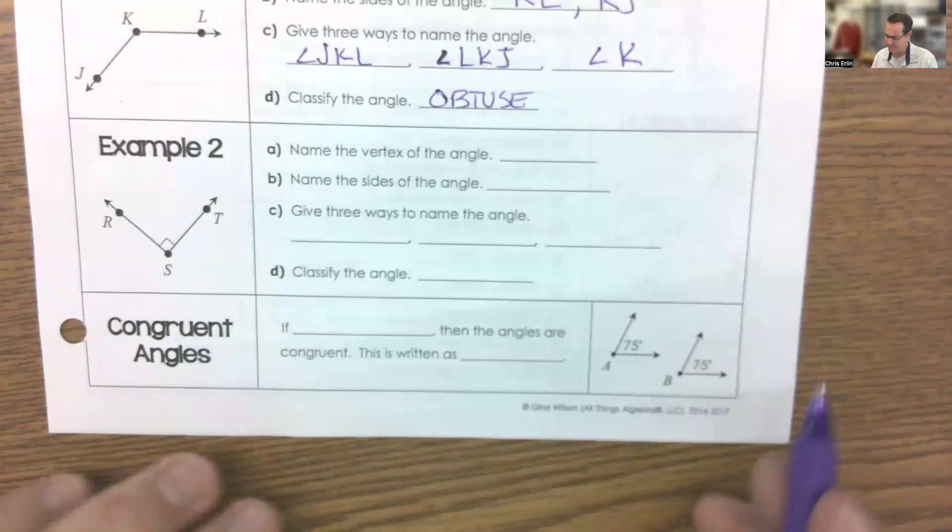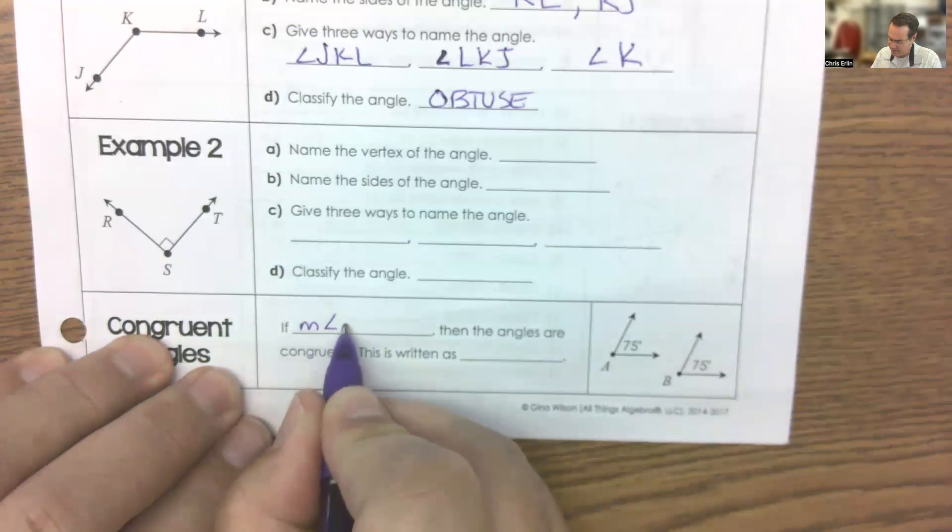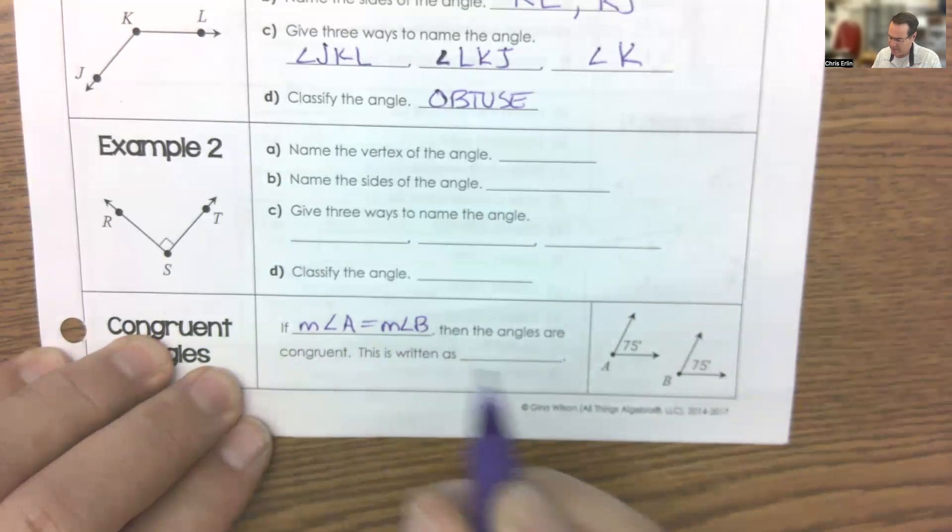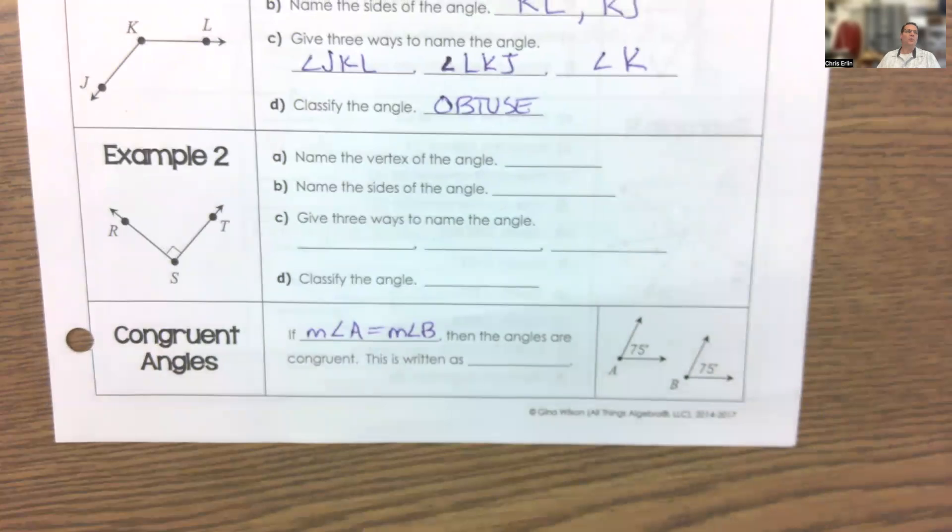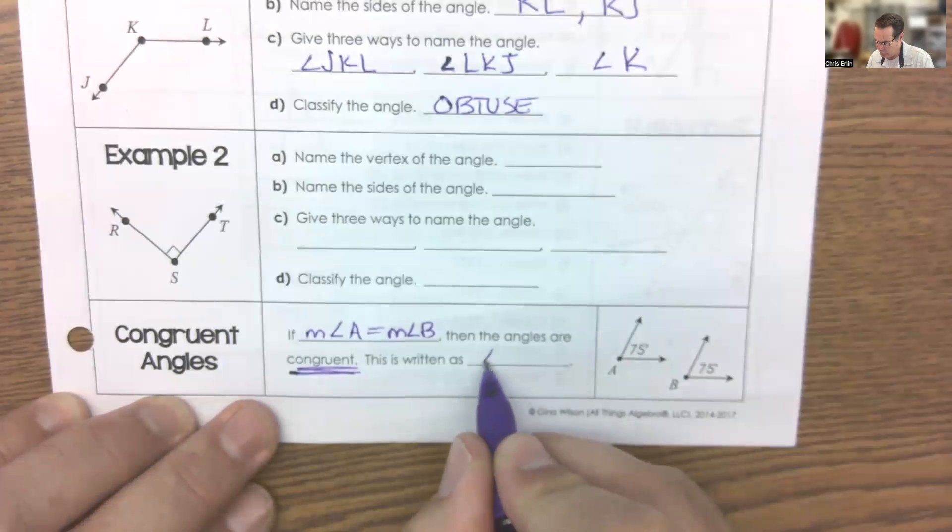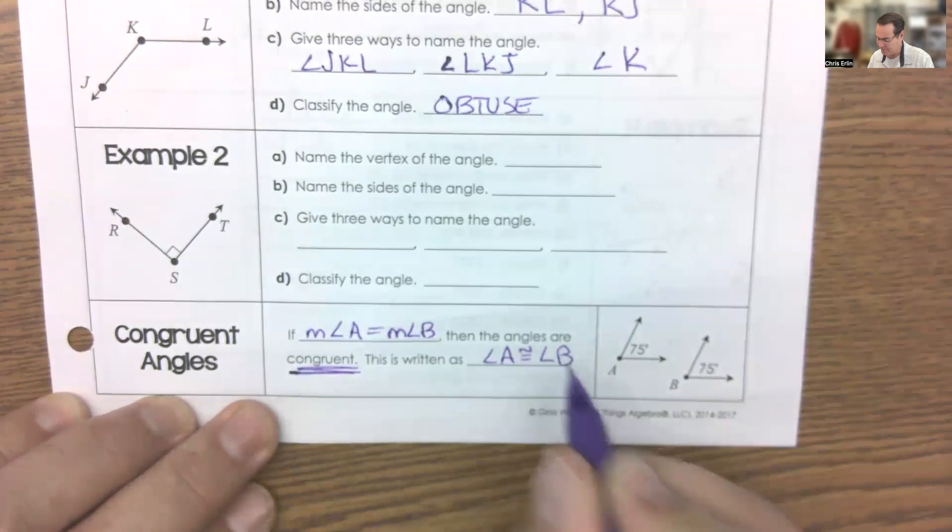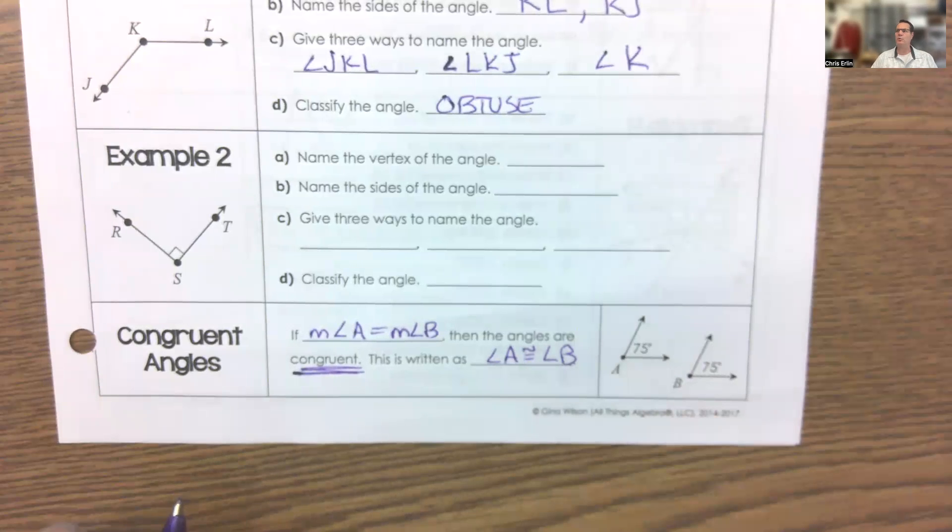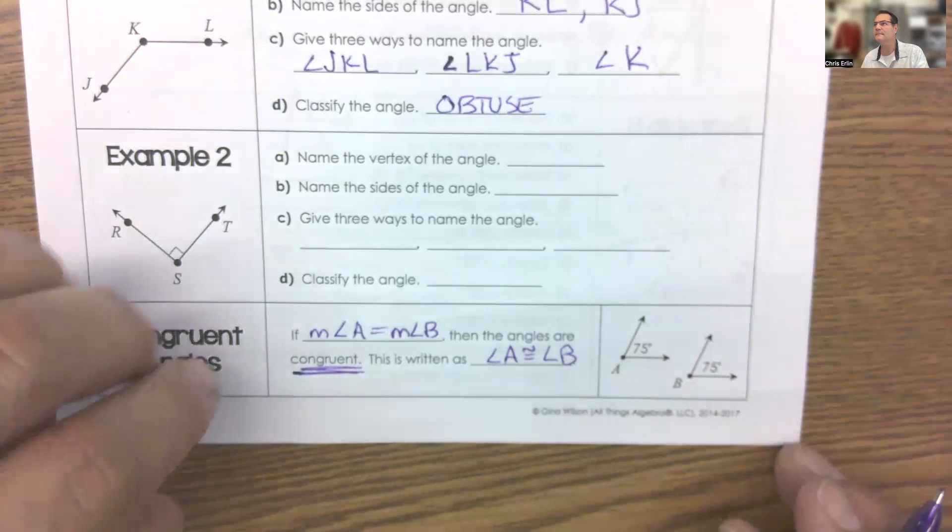Now, here we've got two angles that share the same measure. And if the measure of angle A is equal to the measure of angle B, then just like we did with segments, if there's only one measurable component about an angle, and those measurements are the same, then those angles are congruent. Do you remember what congruent means? Remember the Ferrari? Same, like perfectly the same, identical in every way. And so if these angles are congruent, then I can say that angle A is congruent to angle B. Remember that congruent sign is an equal sign with a little tilde on top.